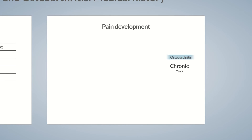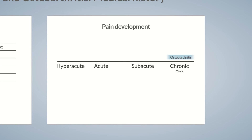In contrast, arthritic pain develops over a short period of time. It can be subacute, acute, or hyperacute. Hyperacute describes a very sudden course and is observed, for example, in gout, with pain developing rapidly over several hours and can be quite severe.